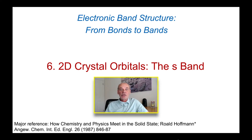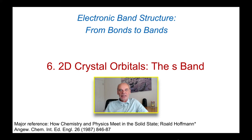The previous videos dealt with one-dimensional arrangement of atoms, but the world isn't one-dimensional. We've got to get up to three dimensions eventually. In this video we'll start by going to a 2D system, where we'll have a square array of atoms, and we'll look at how the crystal orbitals form in that system. We begin with the s orbitals.